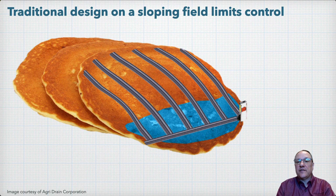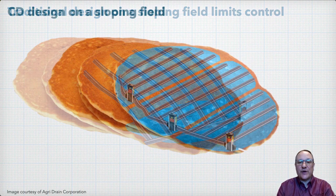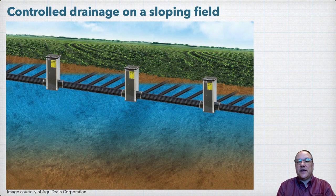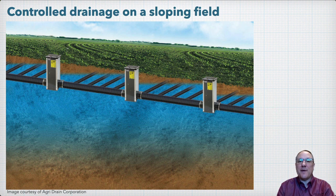If we wanted to add more control to a sloped field with that traditional layout, there's no good place to put another control structure — we'd have to put one on each individual lateral. A better design for controlled drainage on a sloped field has the main running up the slope and the laterals running across the slope. With this design, we can add additional control structures on the main and divide the field into separate control zones. Each control structure resets the outlet elevation to control drainage in that zone. Until recently, this would entail using multiple traditional manually operated control structures, making management on sloping fields a real challenge.